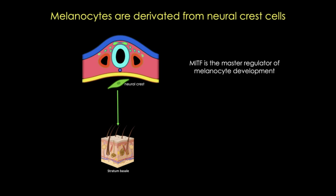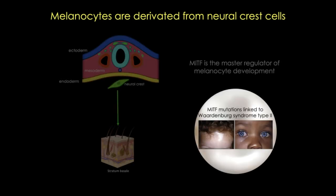MITF mutations are linked to Waardenburg syndrome type 2. Patients with this syndrome have hearing loss and striking changes in pigmentation of the hair, skin, and eyes. On the left, you can see a patient with loss of pigmentation in a large patch on the forehead and in the hair above that patch. On the right, you can see the very characteristic bright blue eyes of patients with Waardenburg syndrome type 2.